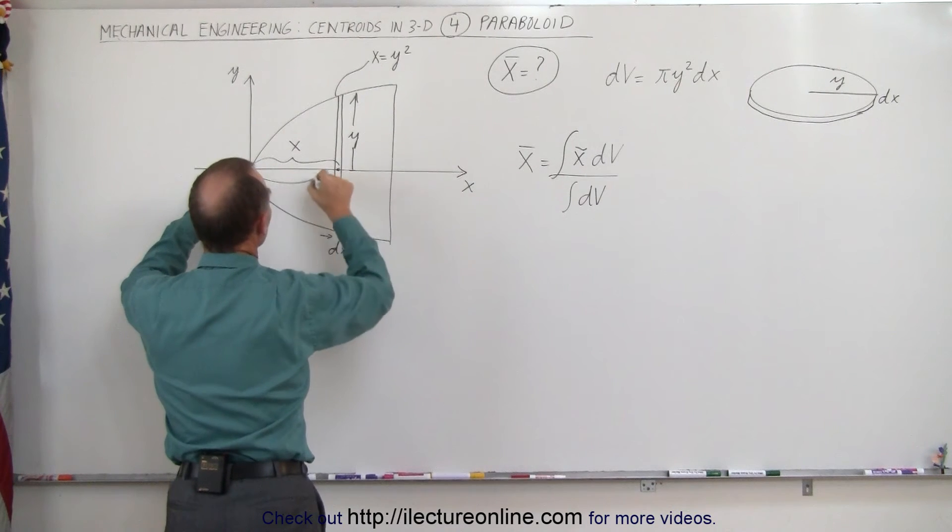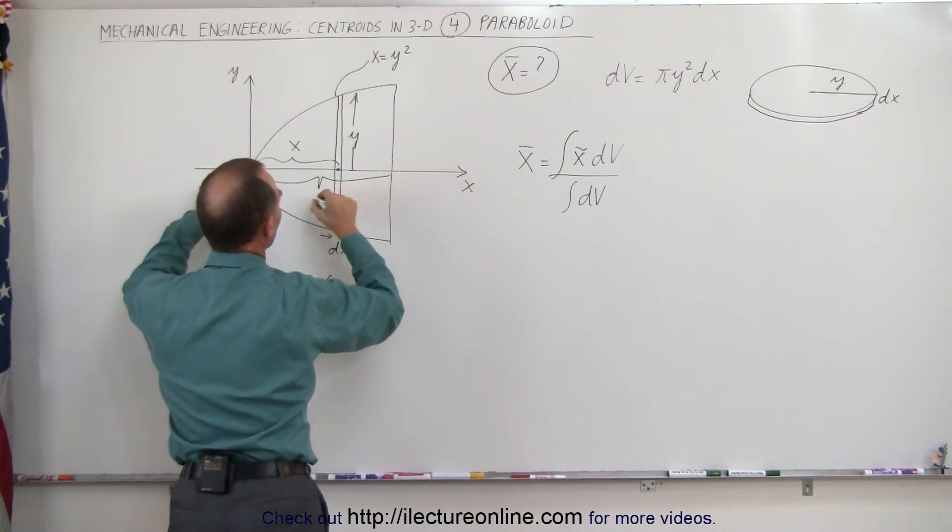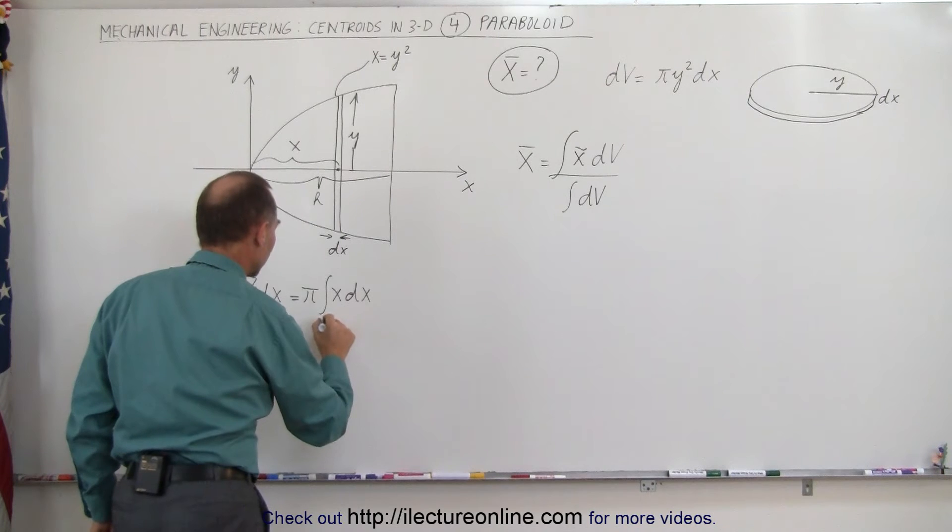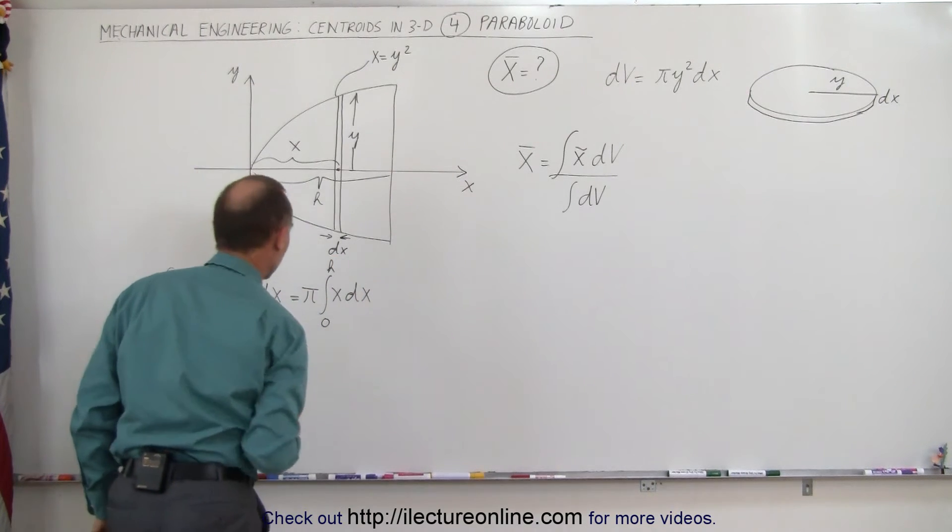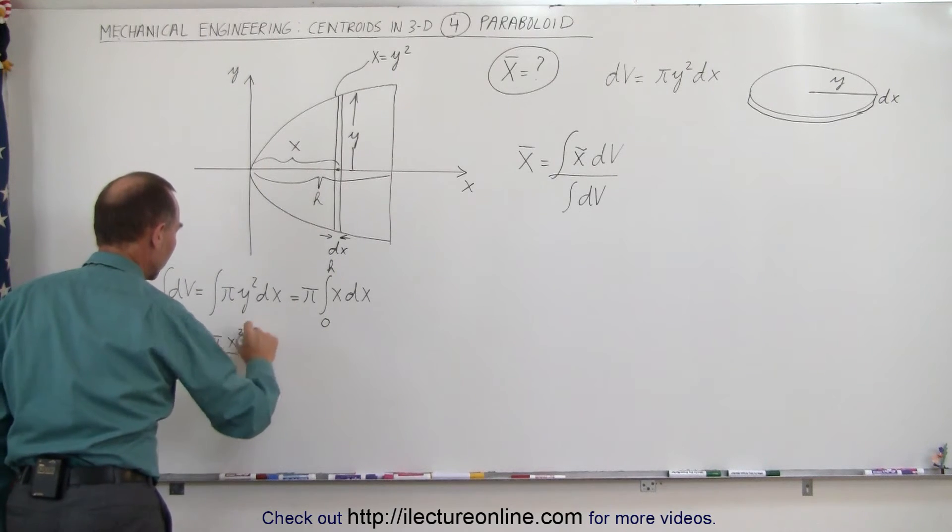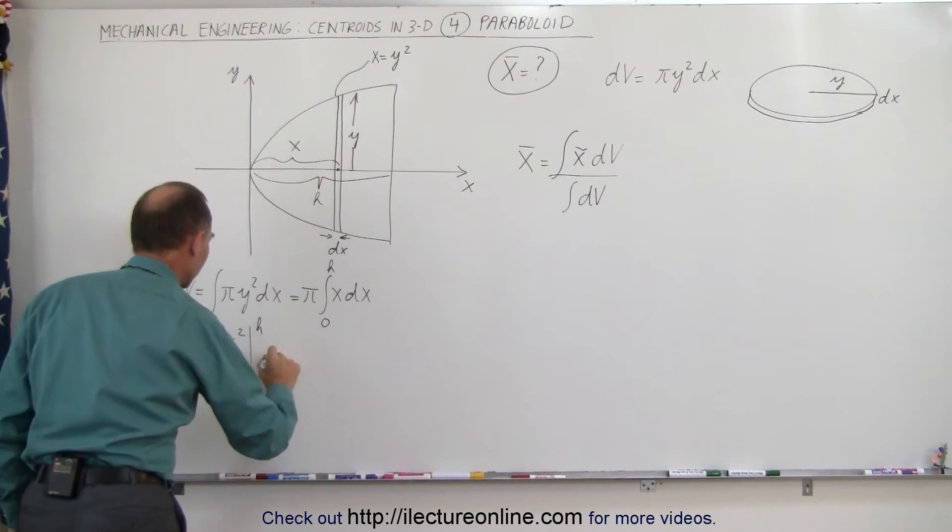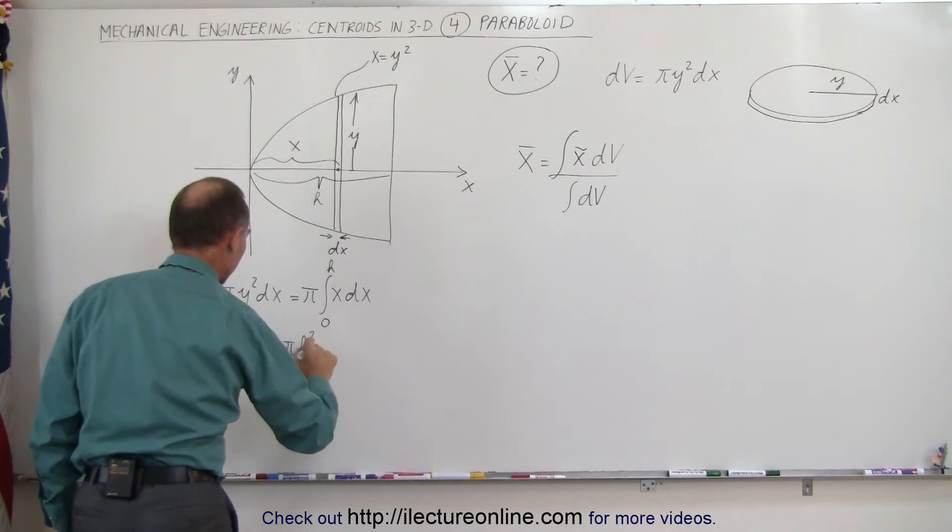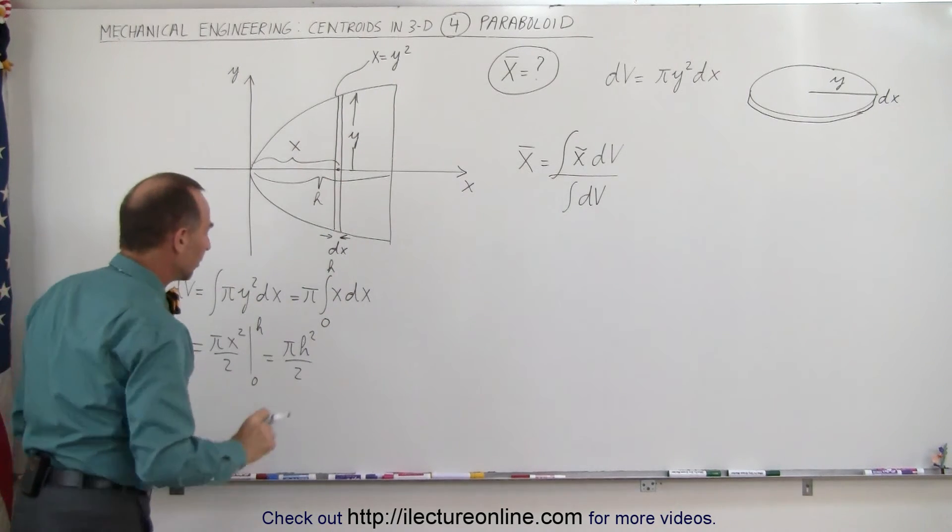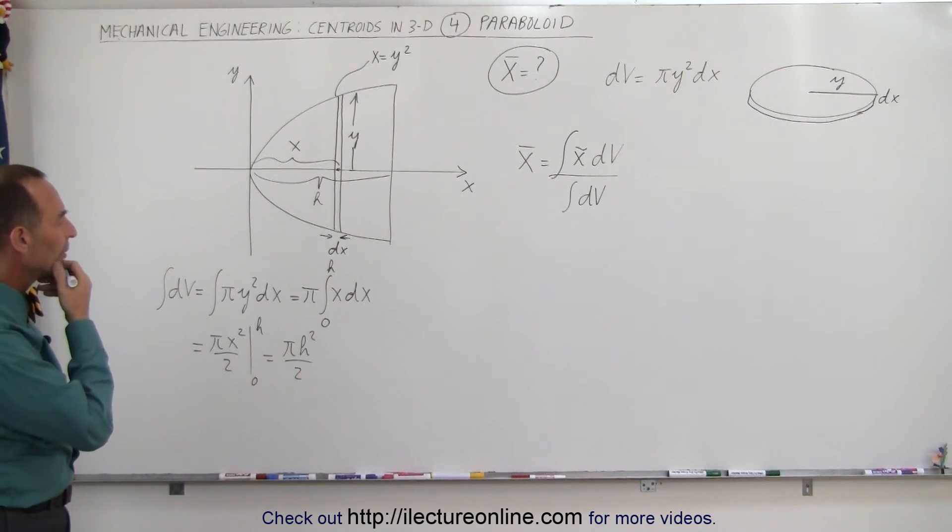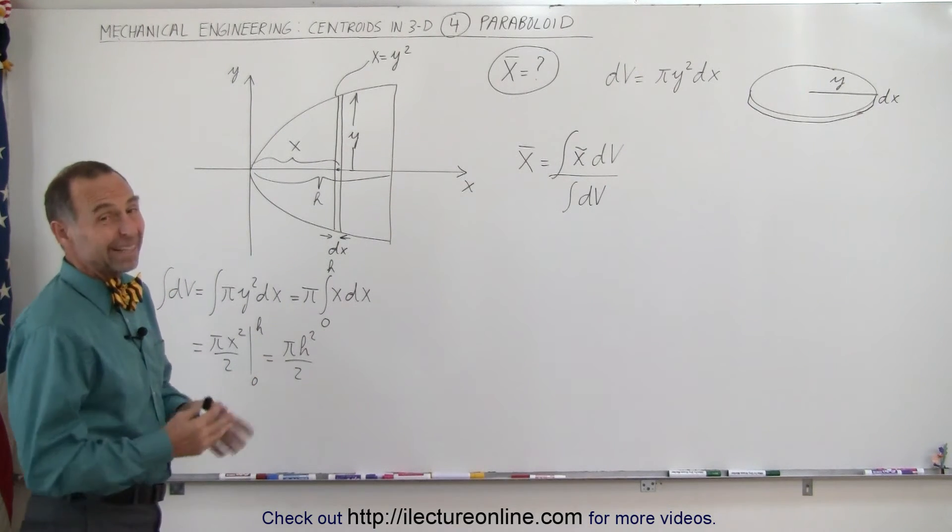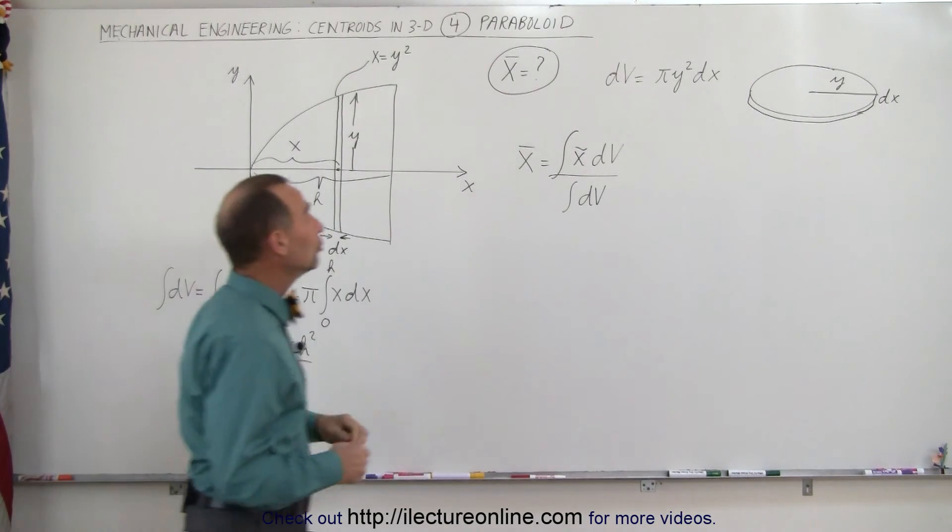So this distance here, let's call that equal to h. That's the height of the paraboloid, and so we're going to integrate from 0 to h. This is equal to π times x² divided by 2, the limits of integration from 0 to h, which means that it's equal to πh² divided by 2. That is the volume of this particular paraboloid. It is kind of a strange answer for the volume of a paraboloid, but let's keep going and see if we get the right answer. Now let's do the numerator.